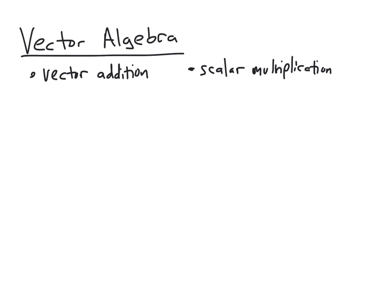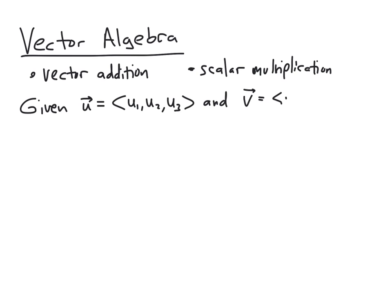These two operations are defined exactly how you would want them to be defined to be as easy as possible to compute. So if we're given two vectors — vector u with components u1, u2, and u3, and another vector v with components v1, v2, and v3 — and for scalar multiplication, a real number a (meaning a is an element of the set of real numbers),